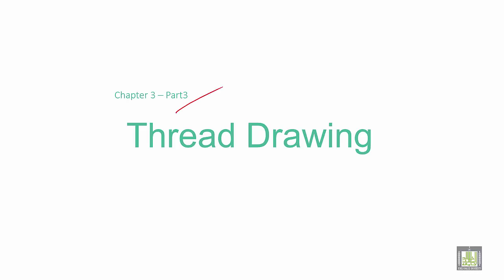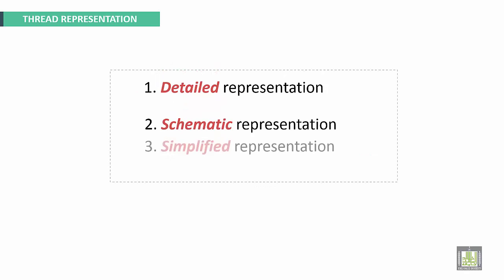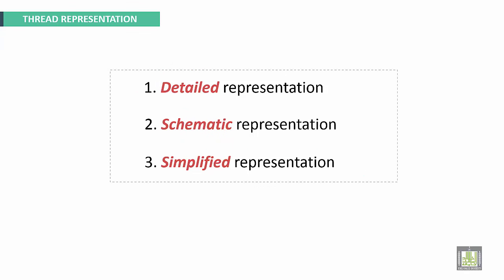Welcome to this third part of the third axis, titled Thread Drawing. To make a representation for a thread, we have three types of representations: the first is called detailed representation, the second is called schematic representation, and the third is called simplified representation — this last one we will use during this course.